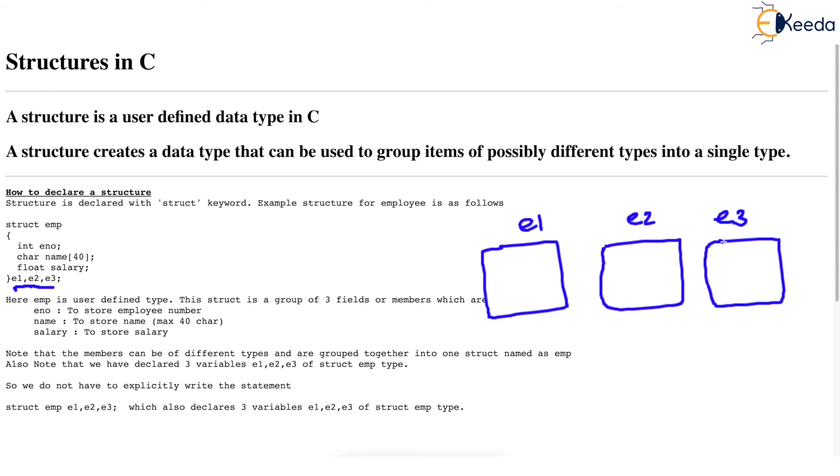Block of memory, storing eno, name, salary. So nothing different, nothing different. The same thing happens because E1, E2, E3 are still the variables.